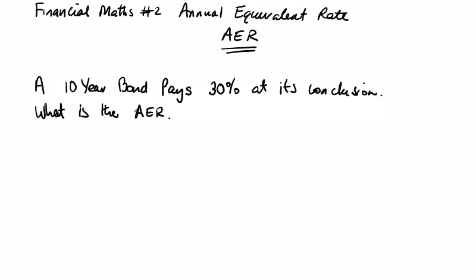In this video we look at a simple way to calculate the annual equivalent rate. A 10-year bond pays 30% at its conclusion. What is the annual equivalent rate? You can see our flat rate, 3% a year, we get 30%, so we're looking at slightly less than 3% is going to be our answer here.